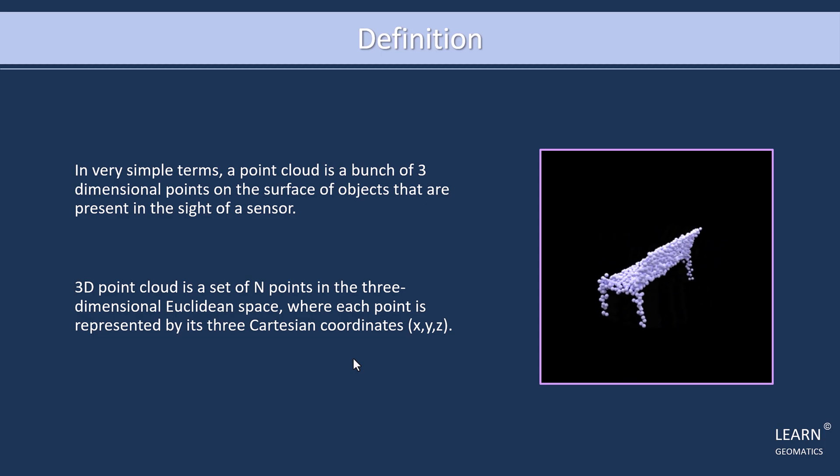The more mathematical definition is that a 3D point cloud is a set of endpoints in the 3D Euclidean space, where each point is represented by its three Cartesian coordinates. This means that each point is described by its position along the X, Y, and Z axes.